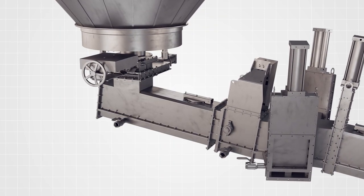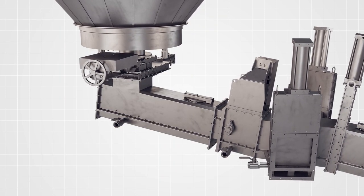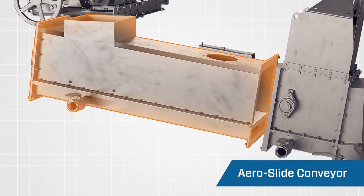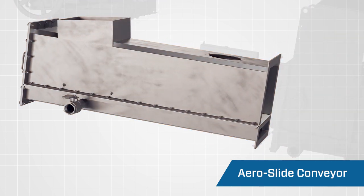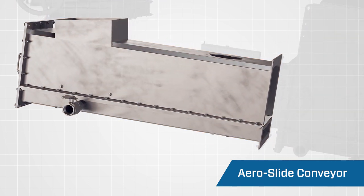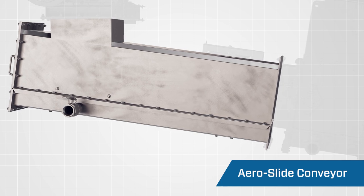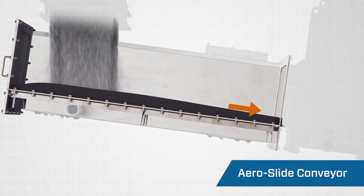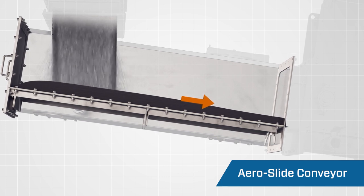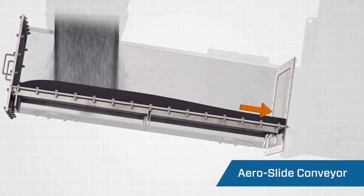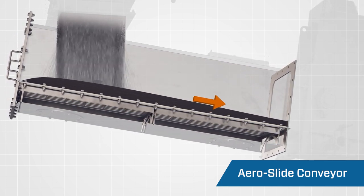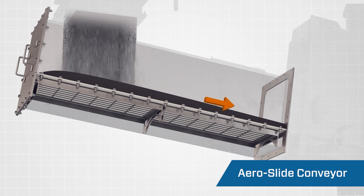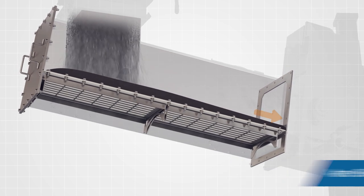When handling lightweight, fluidizable dry powders, the aero-slide conveyor is among the most cost-effective options for transporting materials from storage to the loading station. Because it uses air-gravity conveyance, it benefits from low energy consumption. With no moving parts and very few wear parts, the aero-slide conveyor also offers low maintenance cost.